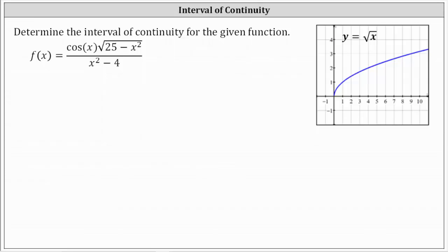We're asked to determine the interval of continuity for the given function. We have f of x equals cosine x times the square root of the quantity 25 minus x squared, divided by the quantity x squared minus four.